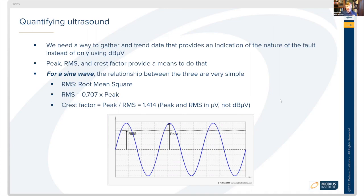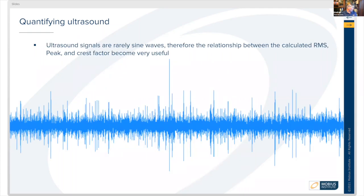For a sine wave, the relationship between the three is very simple. The root mean square is between the center line and 0.707 of the height of the amplitude — about 70.71% of the amplitude height. The crest factor is the ratio of peak to RMS, and for a simple sine wave the peak to RMS is 1.414. But this is a very simplistic signal. Real-world signals look quite different, and those signals are much better represented when we think about RMS, peak, and crest factor.